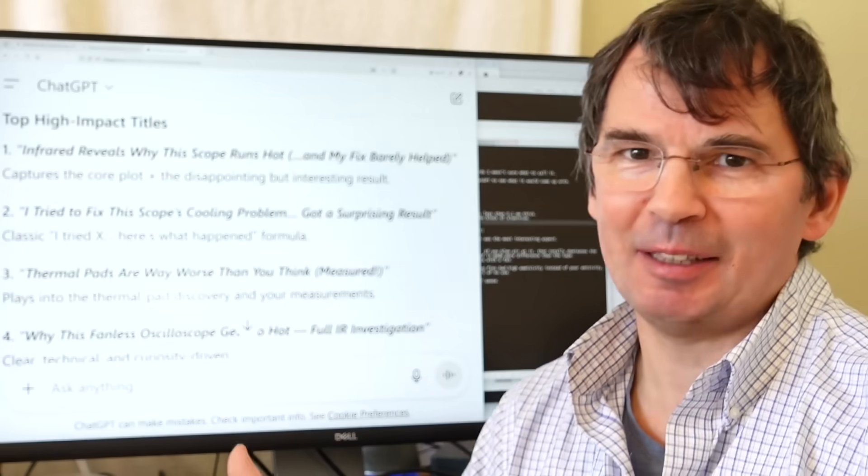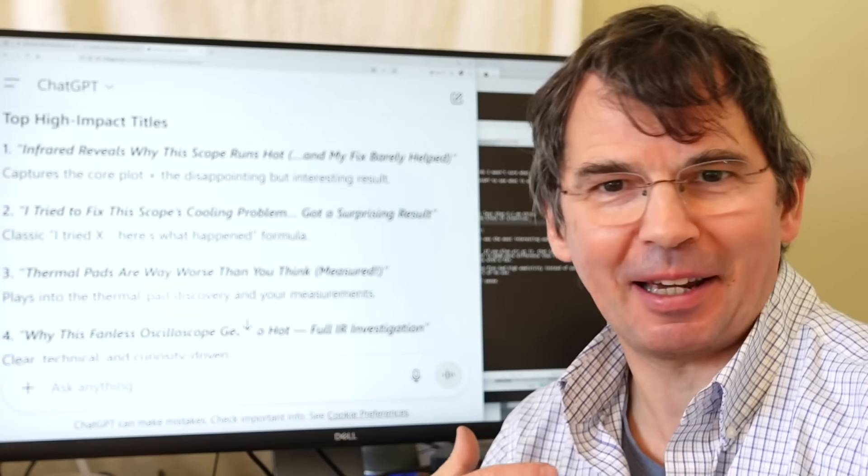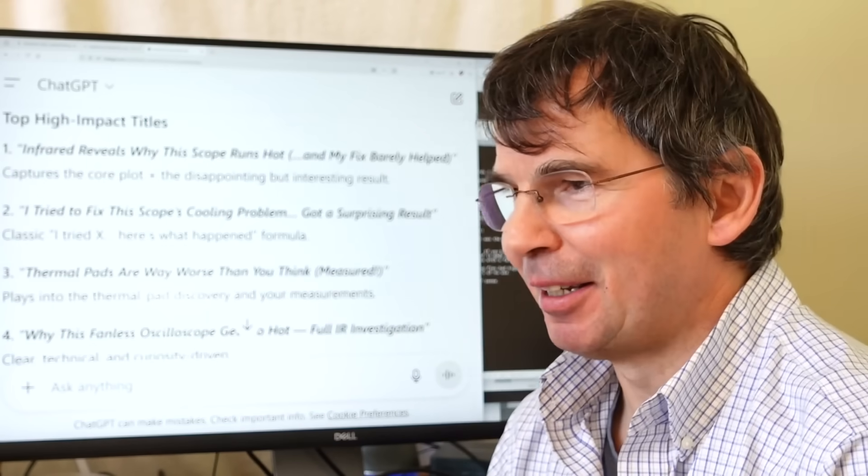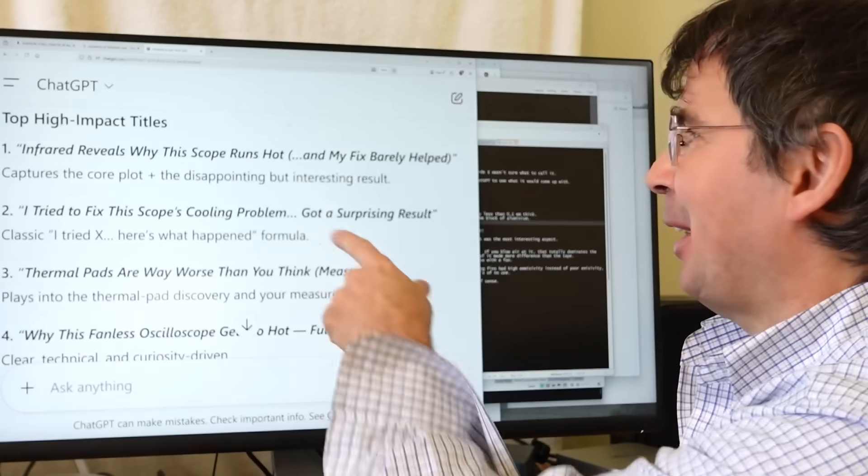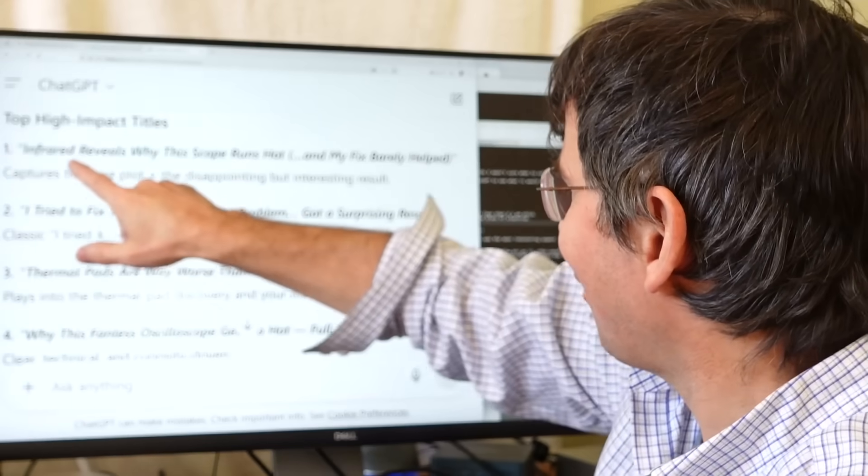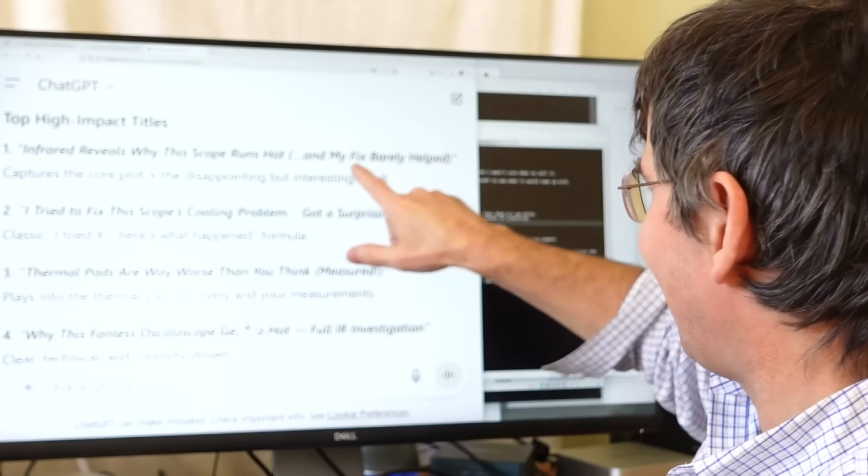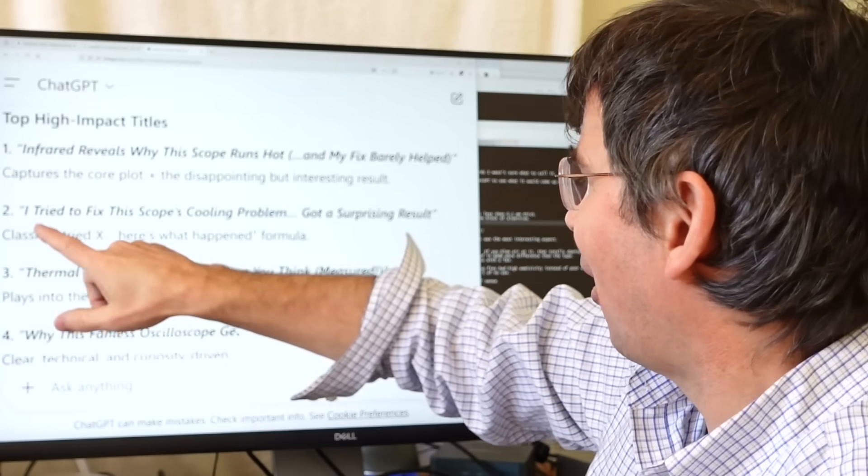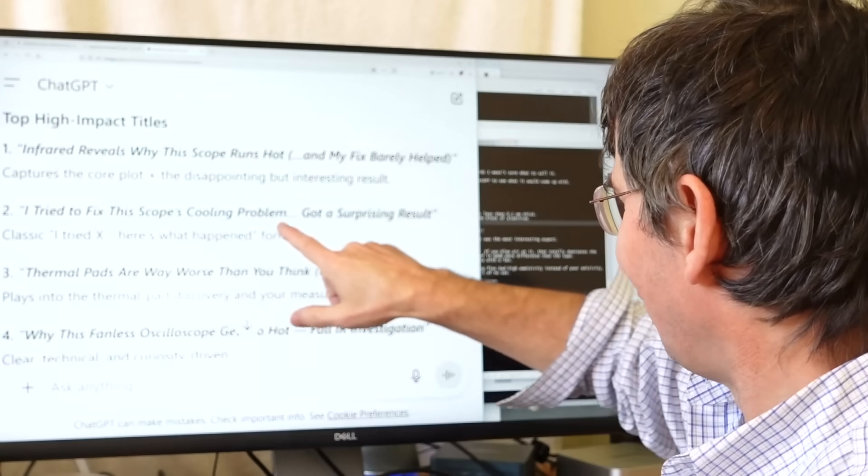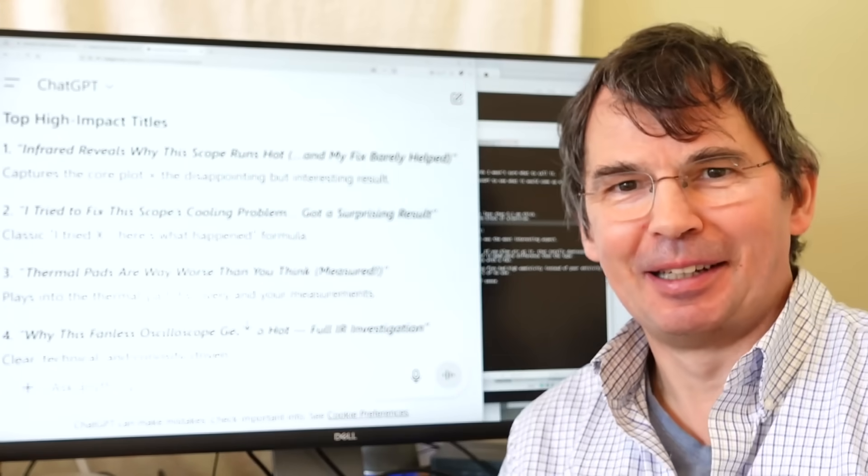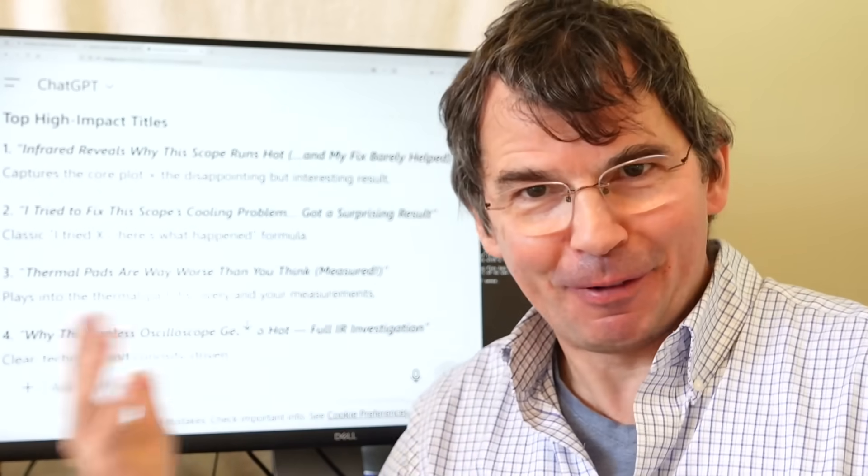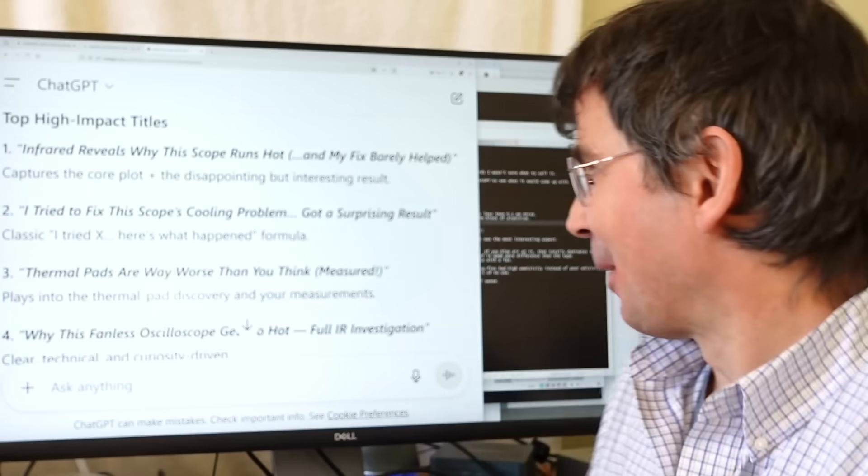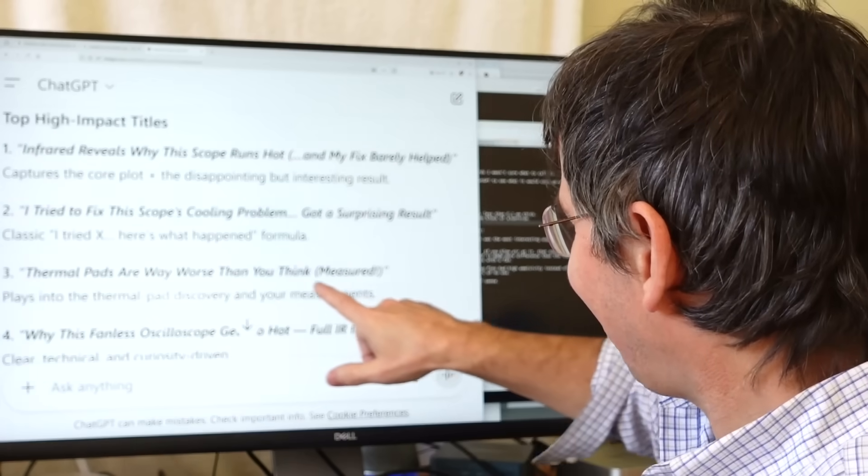I didn't have a good title in mind when I started the video and afterwards I still didn't have a good title so I thought, well, let's see what AI suggests and infrared reveals why the scope runs hot and my fix barely helped. I guess it's true but the scope doesn't really run hot. I tried to fix the scope cooling problem got a surprising result. Is this where people get their video titles from these days? Is AI? Thermal pads are way worse than you think.